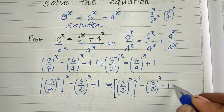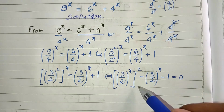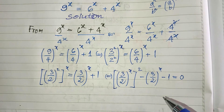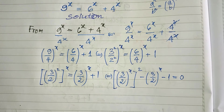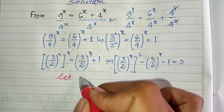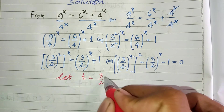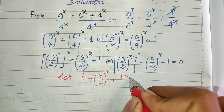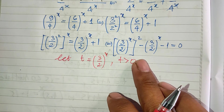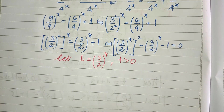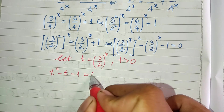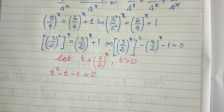Now we see the equation has (3/2)^x appearing twice, so I let it be another variable. I let t = (3/2)^x, where t must be positive. Now we get the equation: t² minus t minus 1 equals zero.